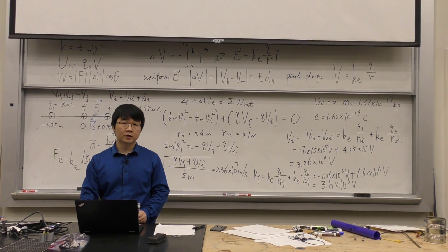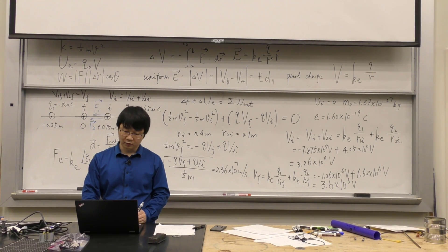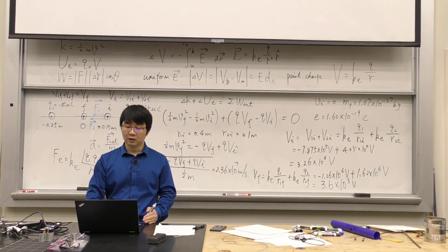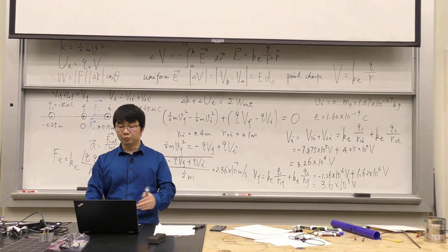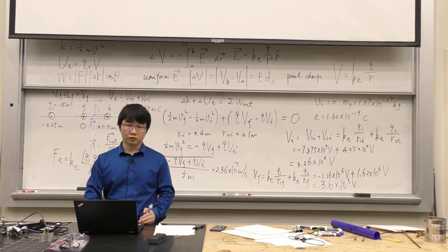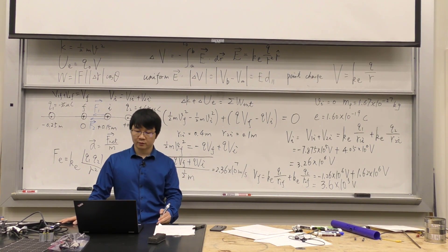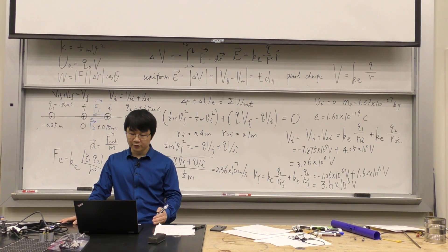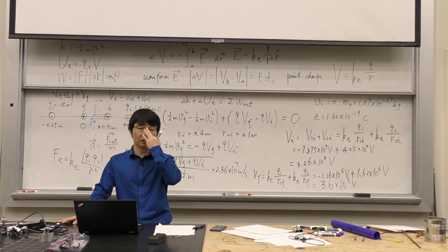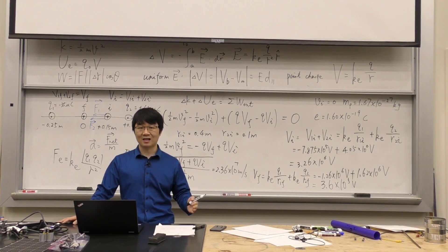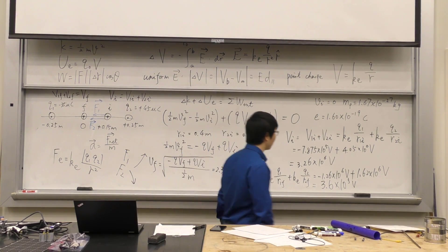Now we're going to move on to the harder part: continuous charge distributions. This is always harder than a group of multiple charges because you need to use calculus — not algebra. A lot of people think it's hard because it's purely math. But we've already done this for electric field, so hopefully it's a little easier the second time.